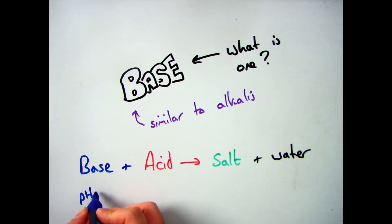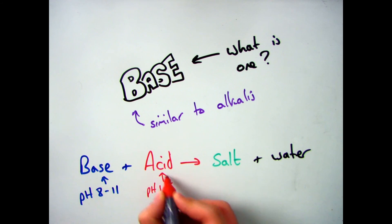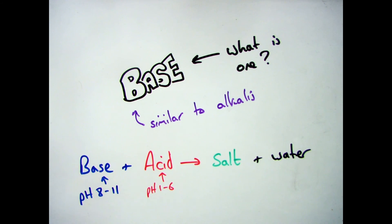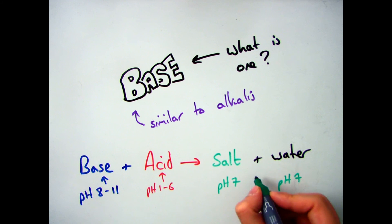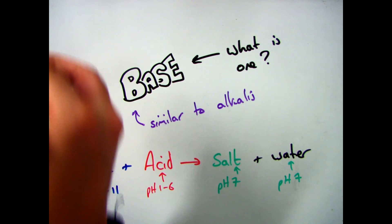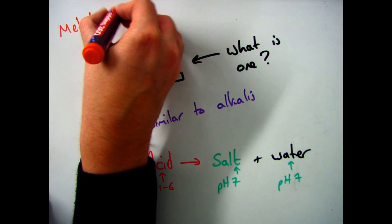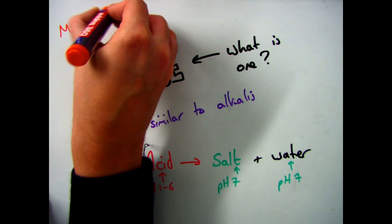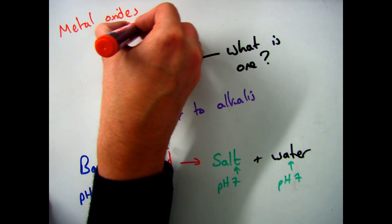As we said, bases are similar to alkalis, so their pH is going to be between 8 and 11. Acids are between 1 and 6, and your salt and water solution will always be neutral, so it will have a pH of 7. The key difference between a base and an alkali is that a base can be soluble or insoluble, but if it does dissolve it's also called an alkali — so alkalis are soluble bases.